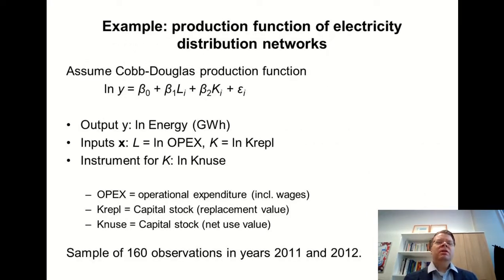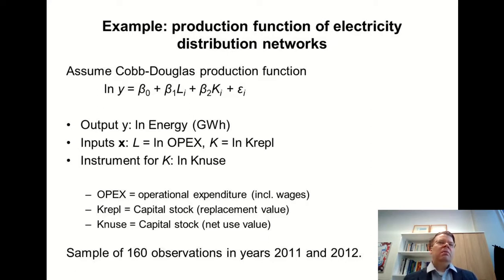Let me give another example from the Finnish electricity distribution industry — something I have worked on quite intensively in my own research. I have taken data from the Finnish Energy Authority on electricity distribution firms in Finland, and I try to fit a production function assuming the Cobb-Douglas functional form. The output is the amount of energy transmitted to customers, and I have two inputs: labor and capital. For the labor input, I use as a proxy the operational expenditure, which includes wages paid by the company, but also a large proportion of labor that is outsourced to contractors.